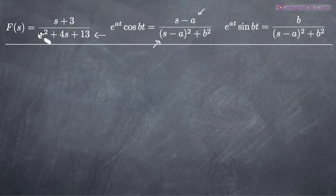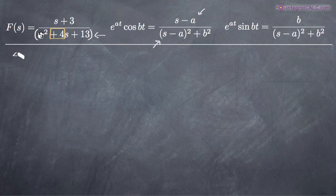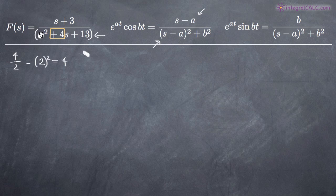Remember that with completing the square, when you've got a polynomial like s squared plus 4s plus 13, you're going to look at the coefficient on the s to the first power term. You've got positive 4. You're going to take that number and divide it by 2, which gives you 2. Then you square it: 2 squared gives you 4. So 4 is what you're going to add to this polynomial in order to complete the square.